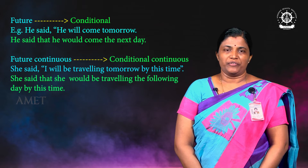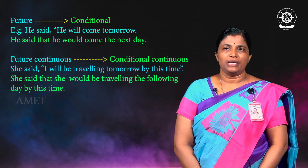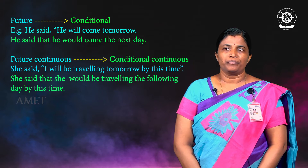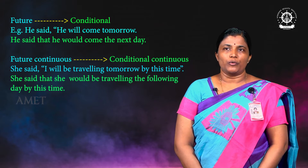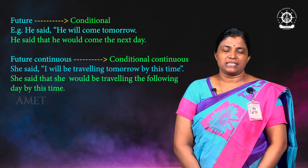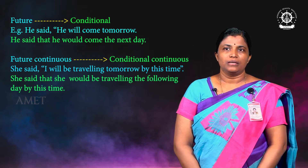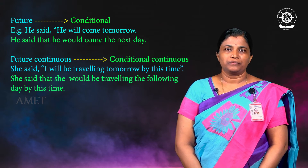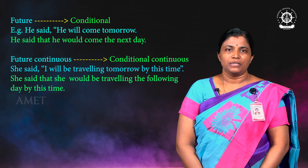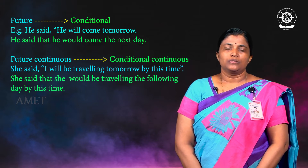Future becomes conditional because we are converting all present into past and past into perfect. Future, when converted into past, 'will' becomes 'would,' so future becomes conditional. For example: 'He said he will come tomorrow' becomes 'He said that he would come the next day.' Future continuous becomes conditional continuous: 'She said I'll be traveling tomorrow by this time' becomes 'She said that she would be traveling the following day by this time.'